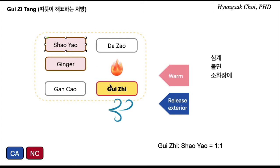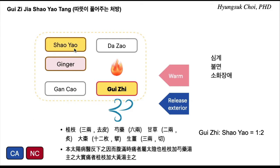Gui-ji-tang is more focused on perspiration by warming inside. But gui-ji-jia-xiao-yao-tang — yes, there is a warming property — but it is more focused on softening, massage, releasing. That image: it is for releasing.